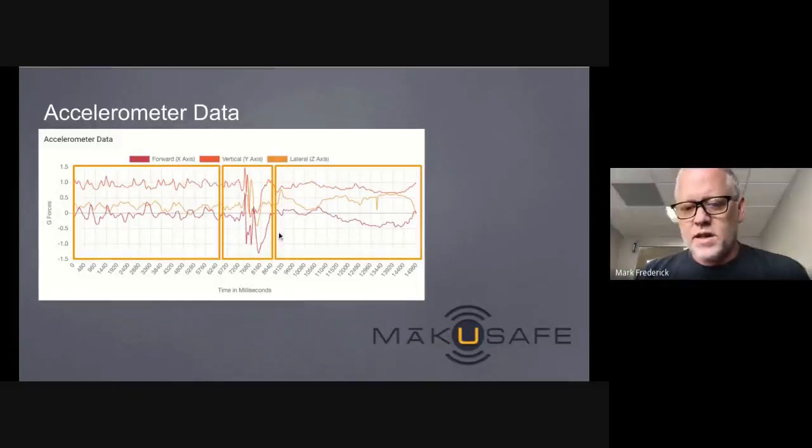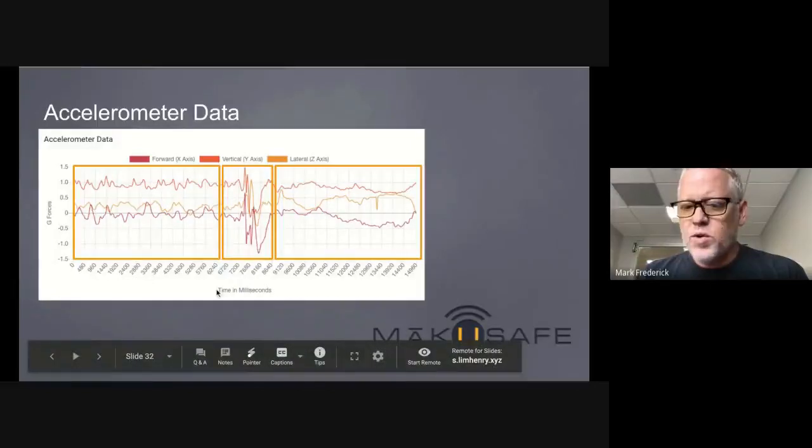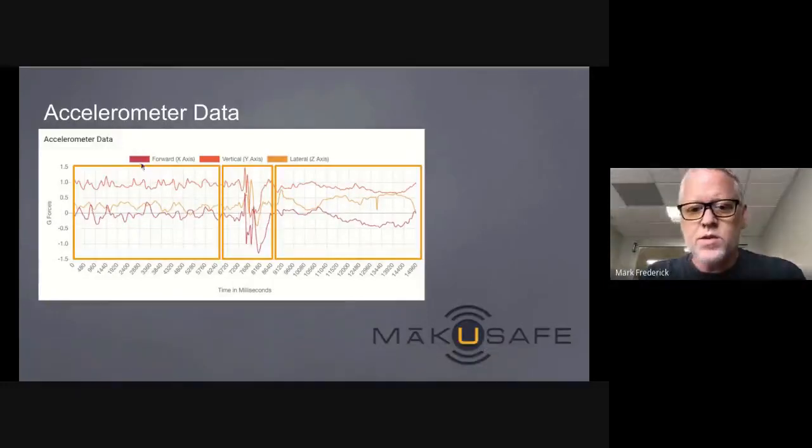That's exactly right, Tom. Today we focus on classifying this middle section, but ultimately what we would love to be able to do is also classify the whole story. In this example right here, this worker was walking, that's this subtle kind of repeating motion here. They slipped, this is what the actual slip data looks like, and then this is where they recovered and they stood somewhat still after it happened. I think they probably were thinking about what just happened.